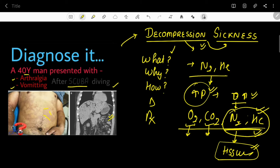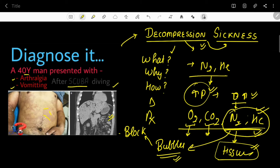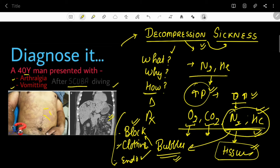When pressure decreases very fast, these gases do not get time to escape from the body. They come out of the tissue because decreased pressure reduces the gas's ability to stay dissolved. The gases enter the blood and form bubbles. These bubbles block blood vessels, activate clotting pathways, and irritate or damage the endothelium, causing vascular injury that leads to end-organ ischemia and other manifestations.